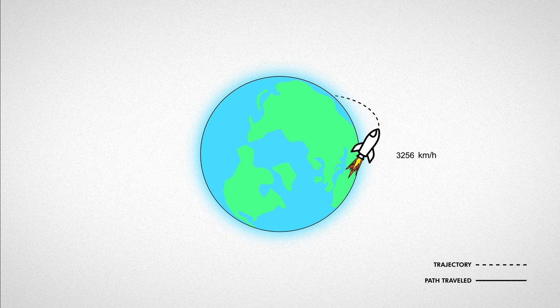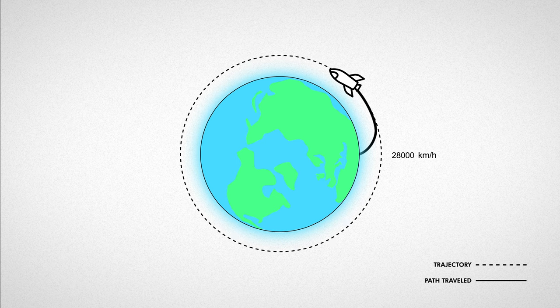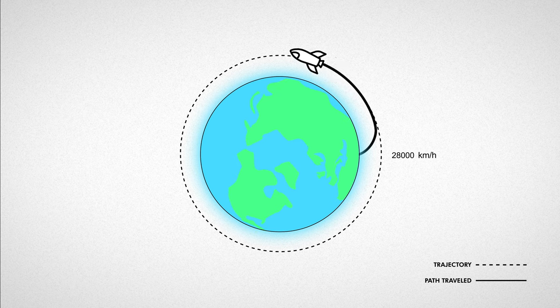So first we take off from Earth's surface, fly up past the atmosphere, and keep accelerating more and more so that we start looping around Earth before we could fall back into it. Now we're in orbit.